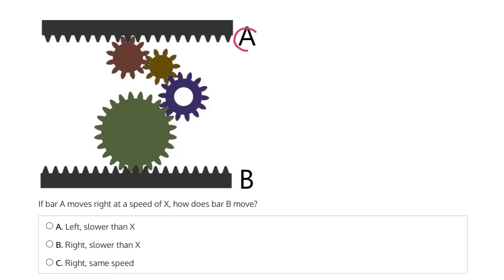So again, we start with the knowledge that bar A, this top bar here, will be moving to the right at a speed of X. And then we see between bars A and B, we have four gears, which we can label L, M, N, and O for easy reference.